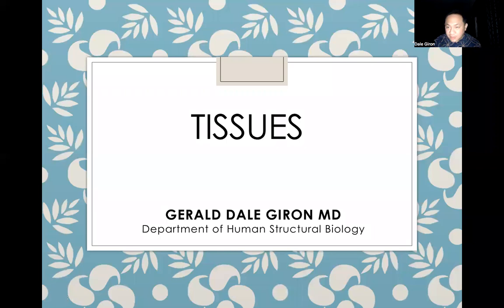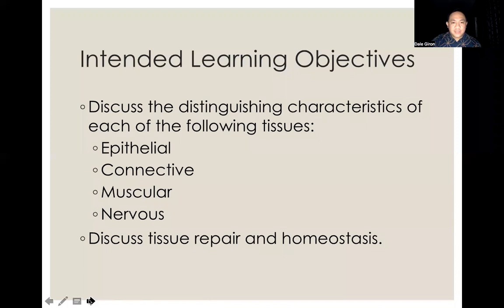This is part three of this week's session, and we will be talking about tissues. These are the intended learning objectives for this session. You will be discussing the distinguishing characteristics of each of the four fundamental types: epithelial, connective tissue, muscular tissue, and nervous tissue. At the end of this discussion, we will also be discussing tissue repair and homeostasis.